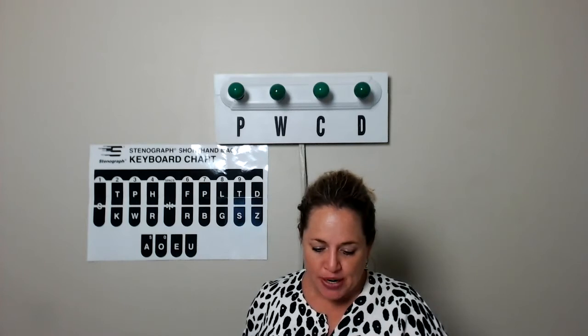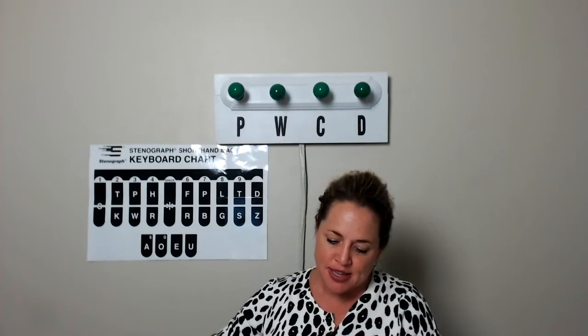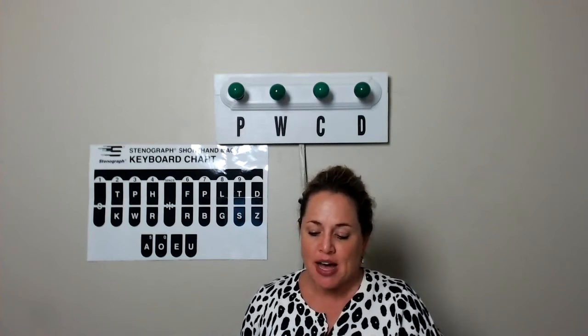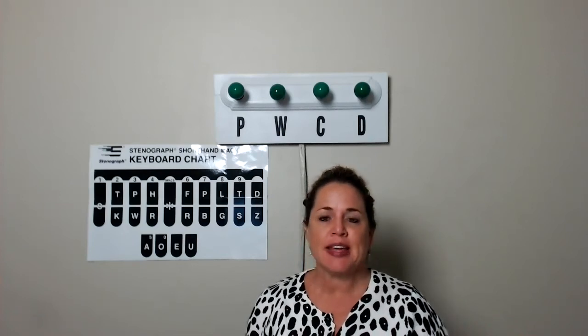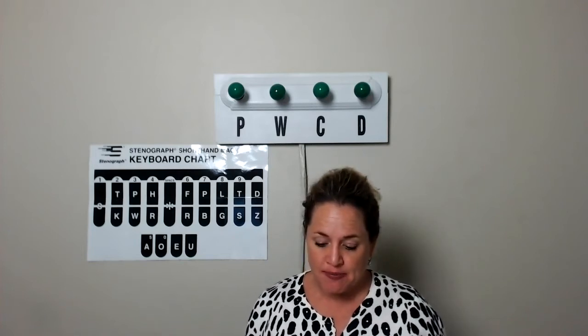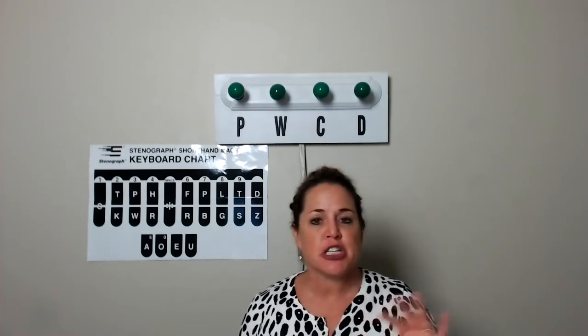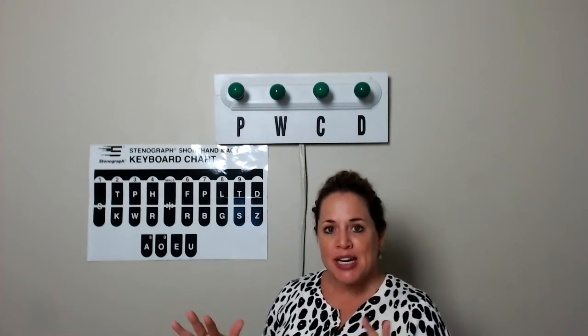Looking over at the next page, 19.9 continues with more letter and initial practices. It's very important you get these down because you're going to hear them whenever somebody refers to a radio station, a particular school, a company — anything with initial letters. For example: IRS, what is your IQ, the DA questioned me, I work for CBS, I am the CEO of the company, I have my BA. Anytime you hear an initial, you're going to use your RBGS, and all the letters will be on the initial side of the keyboard with vowels at the bottom.